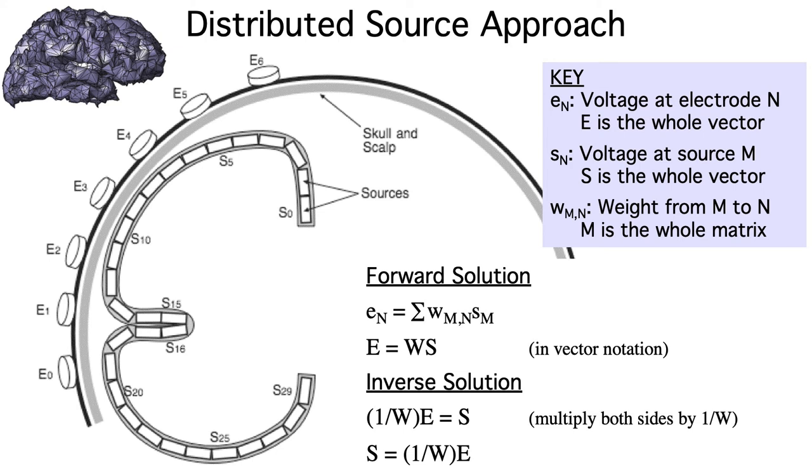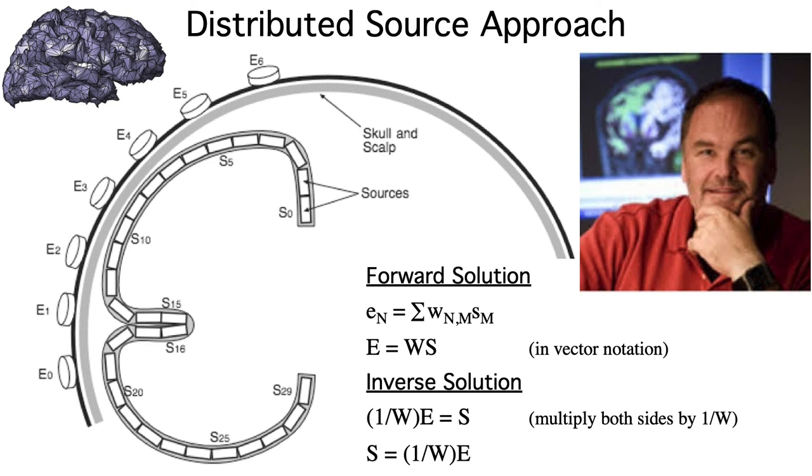We now have everything we need to solve the inverse problem. We have E, the vector of observed voltages, and we have W, the matrix of weights. We can just multiply E by the inverse of W to get the activation level for each patch of cortex. This is done separately for each time point. Isn't this beautifully simple? I still remember the day that Anders Dale explained this to me when we were both grad students at UCSD, back when we both had a lot more hair.